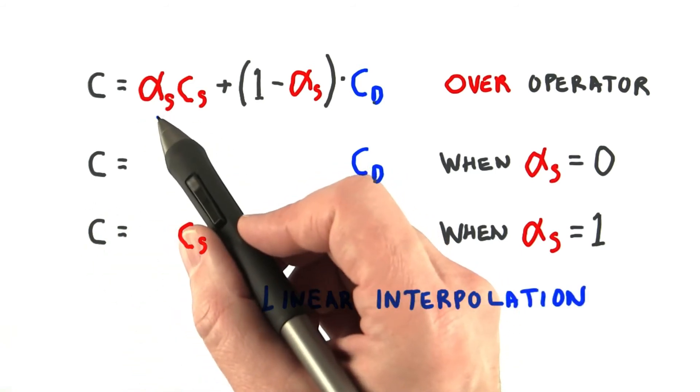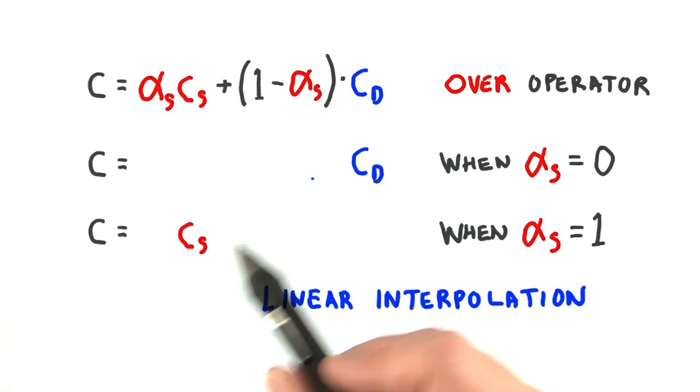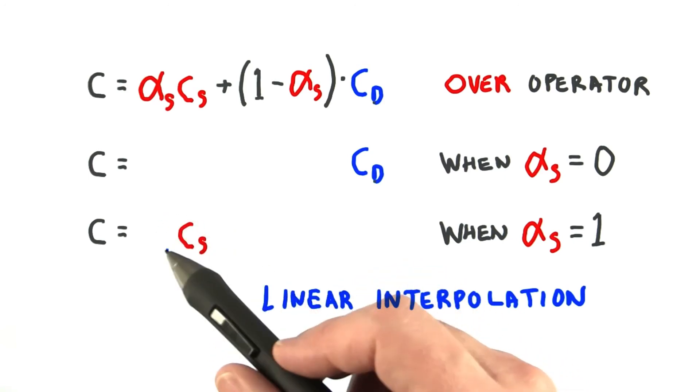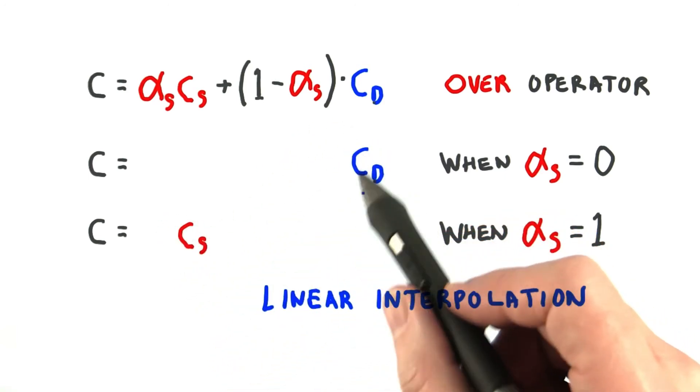The alpha value blends between these two colors. Another way to say it is that the equation performs linear interpolation. As one color's influence increases, the other color's effect drops off in proportion.